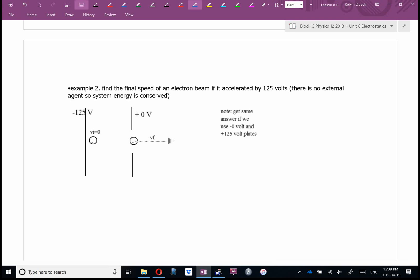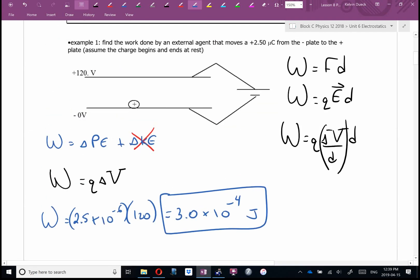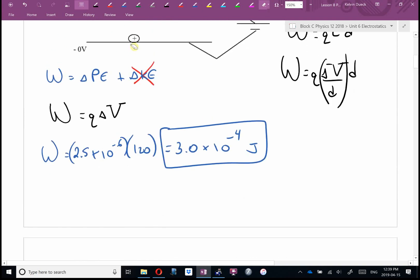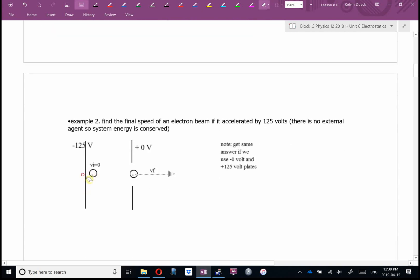Example 2. If we take example 2 and a little bit of cleverness, we're very close to inventing television. Find the final speed of an electron beam if it's accelerated by 125 volts. There are no external agents, so system energy is conserved. We're going to use conservation of energy. Trevor, did this question say how much work? I'm going to argue that this, mathematically, is the previous question just turned 90 degrees.